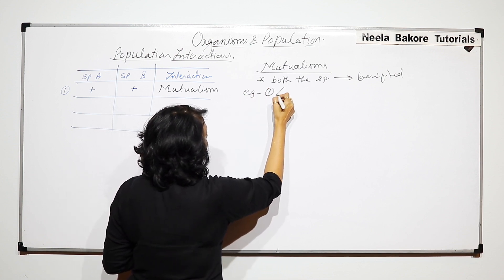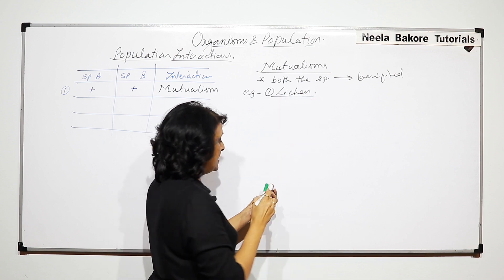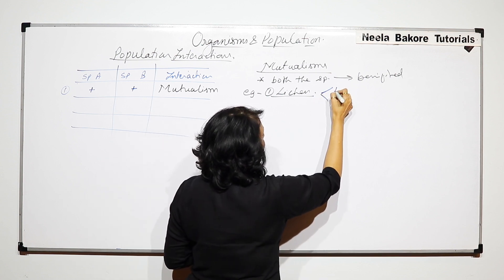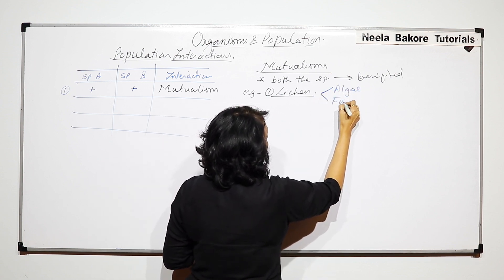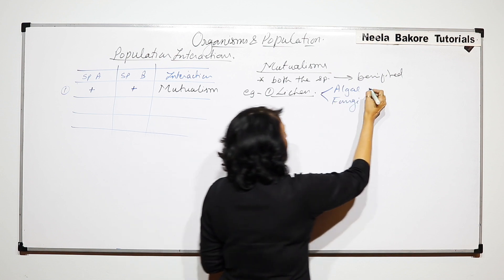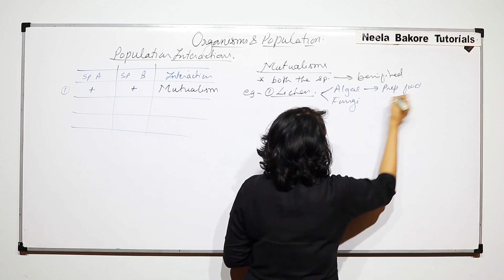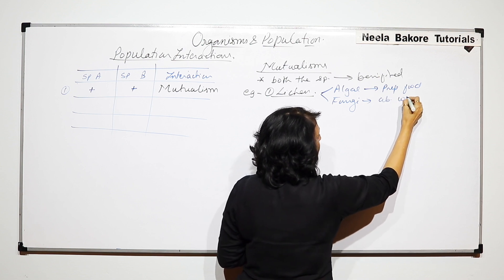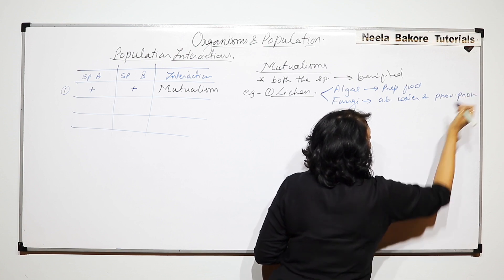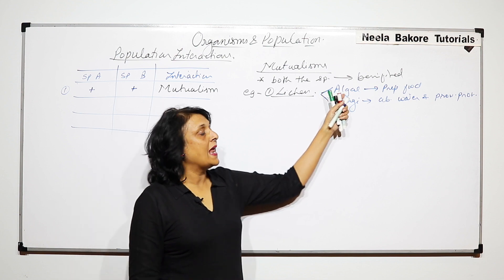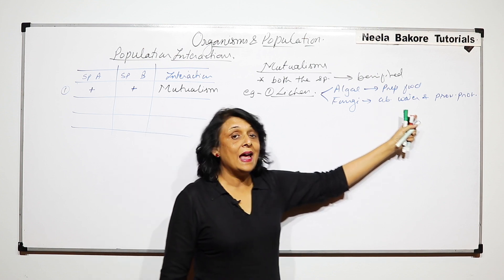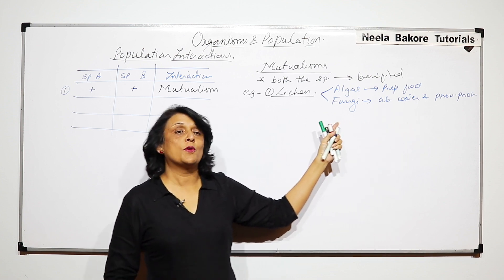Say the first example is of lichens. Lichens are associations of algae and fungi. So there are two species, algae and fungi. And both are getting benefited out of each other. Algae prepares food and fungi absorbs water and provides protection to the algae. So the algae partner is going to get the water which is absorbed by the fungus and it will also enjoy the protection provided by the fungus.